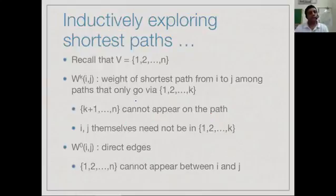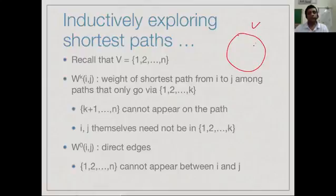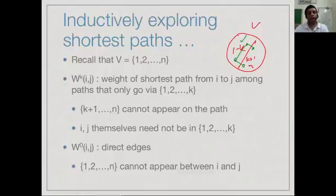Vertices are numbered 1 to n. We define w_k(i,j) to be the weight of the shortest path from i to j where the intermediate vertices are restricted to be in the set 1 to k. We split the vertices: 1 to k are allowed, while k+1 to n are not. The end points i and j themselves need not be in that range; only the intermediate vertices are restricted to 1 to k.